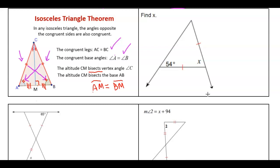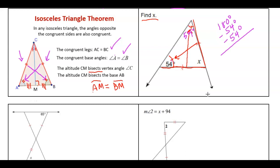First isosceles example: find x. The two sides with tick marks are equal, so the angles opposite those sides are equal. If one base angle is 54, the other is also 54. Using the triangle sum theorem, 180 minus 54 minus 54 gives us 72 degrees for x.